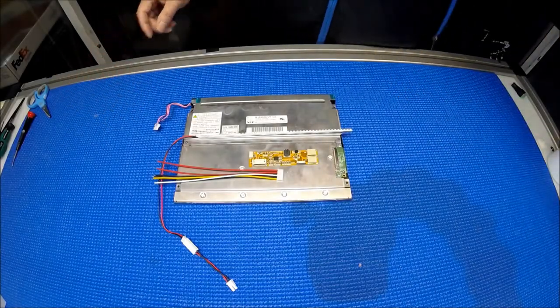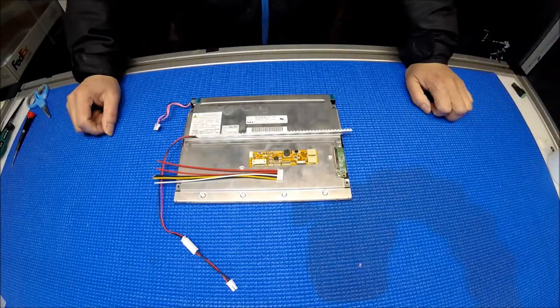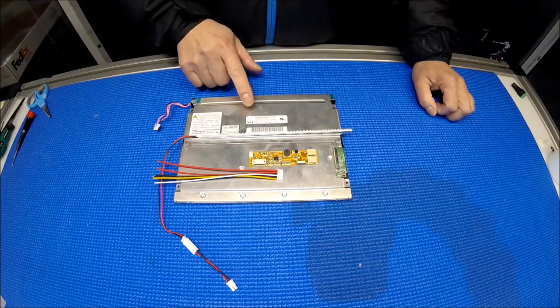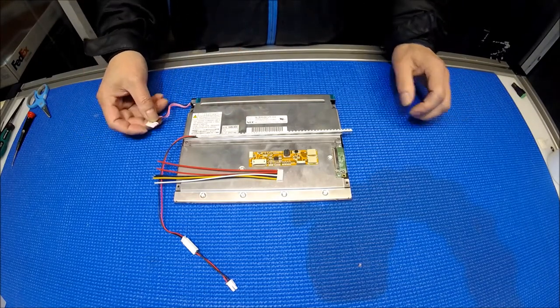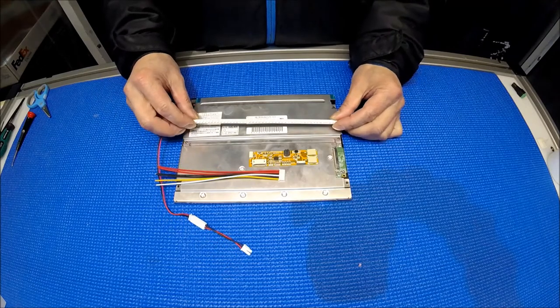Hello, in this video I would like to show you how to upgrade this 6.5 inch NEC screen from 2 CCFL to our UB54 series.